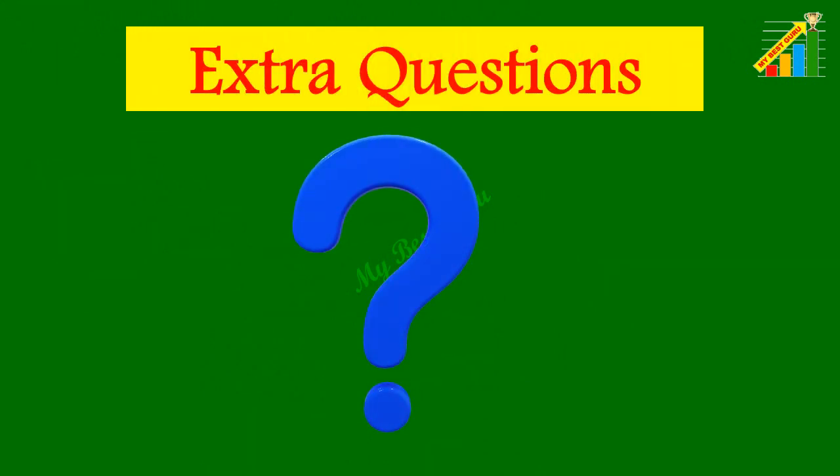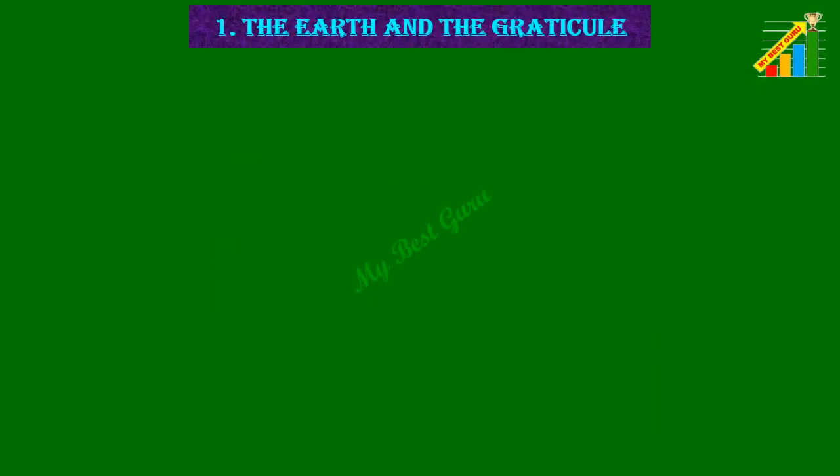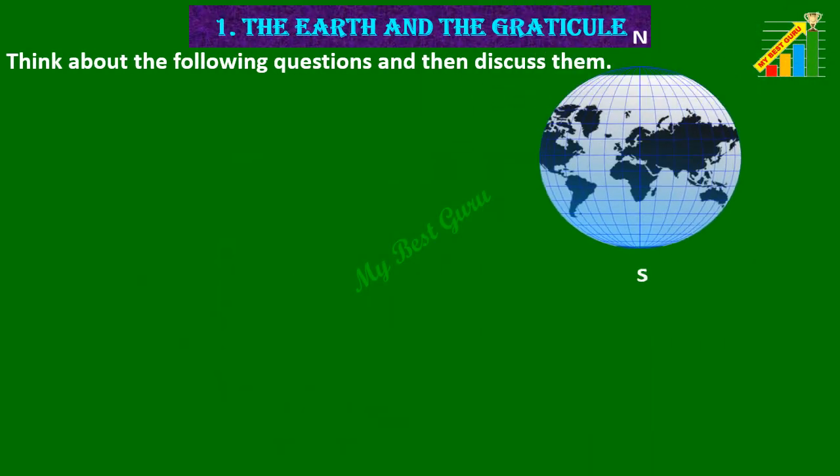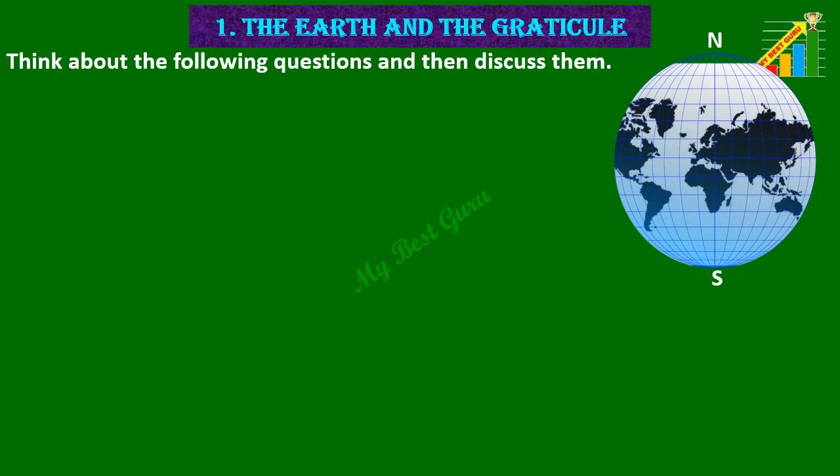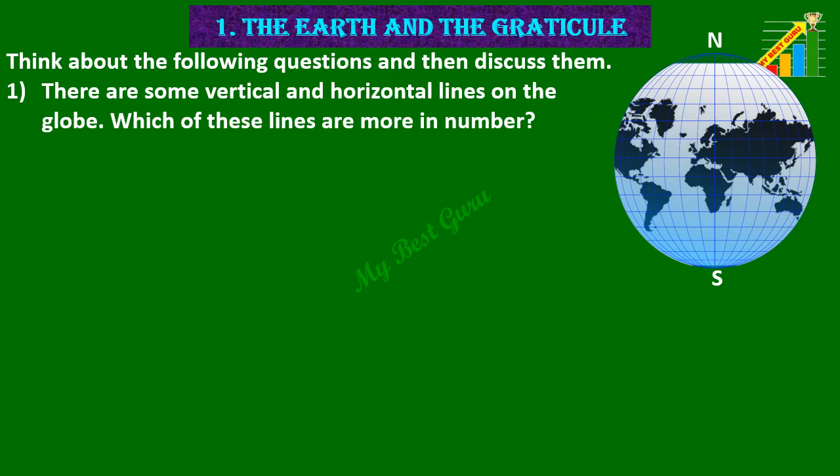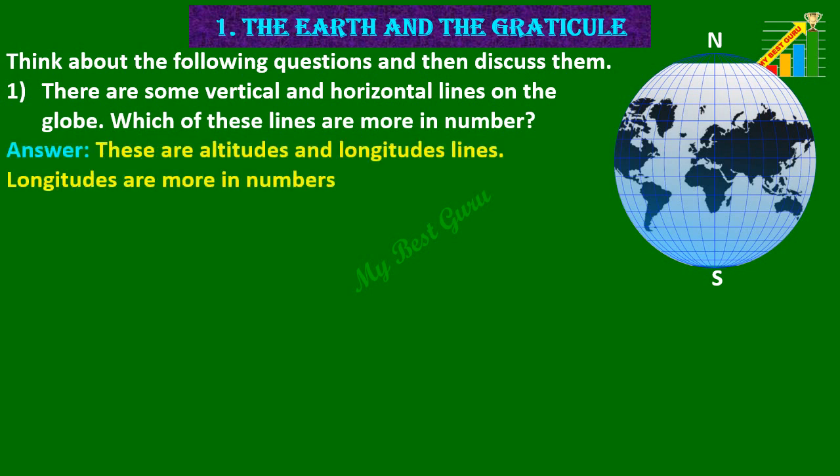Extra questions. Think about the following questions and then discuss them. 1. There are some vertical and horizontal lines on the globe. Which of these lines are more in number? Answer: These are latitudes and longitudes lines. Longitudes are more in numbers.